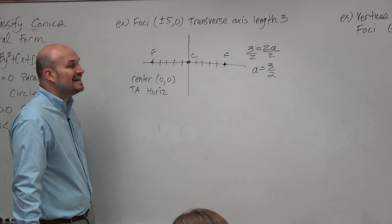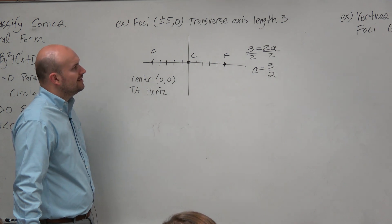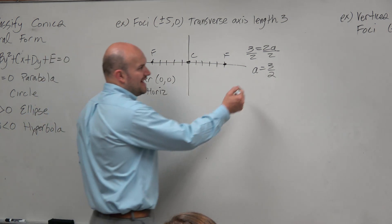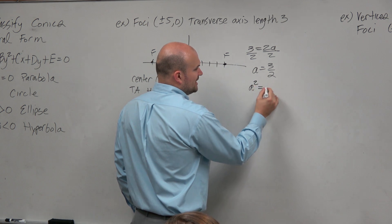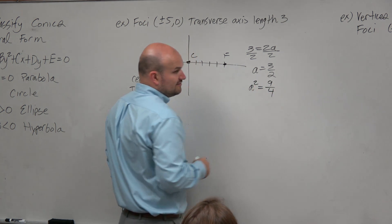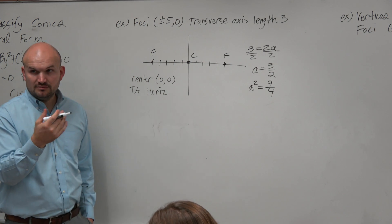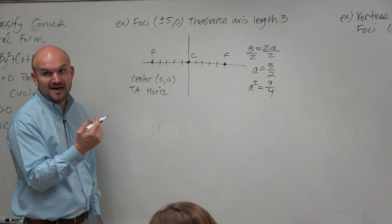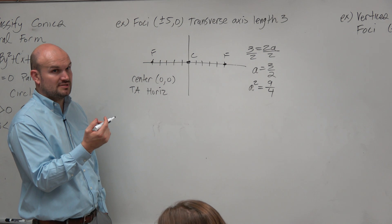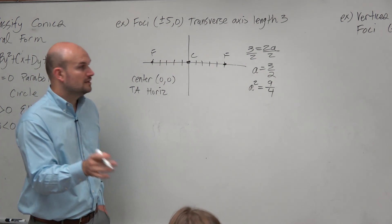Again, we're trying to identify what is our a, b, and our c. So if a is 3 halves, that means a squared is 9 fourths. Just squaring both sides, squaring 3 halves. 3 halves times 3 halves is 9 fourths. Yes? Yes? Okay.